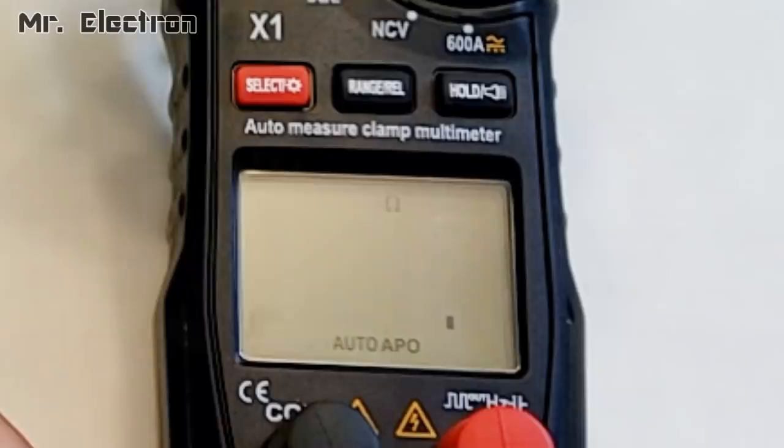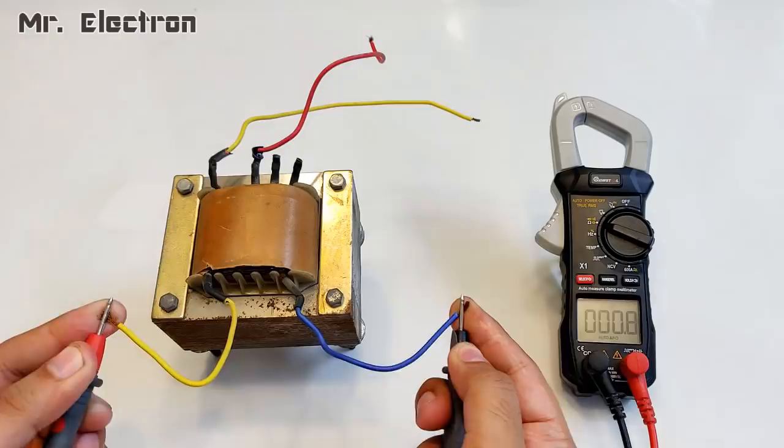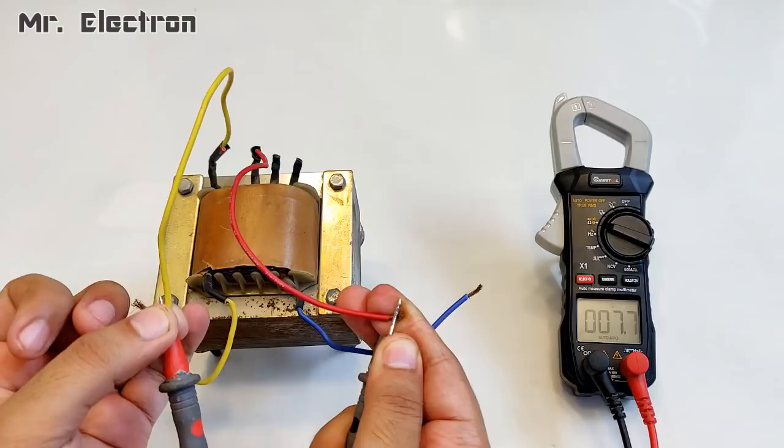As you can see, this side is showing only 0.8 ohms, so it is the low voltage secondary side. And for the other side, as you can see, it is showing 7.7 ohms, so this side becomes the high voltage side.